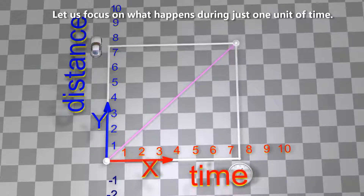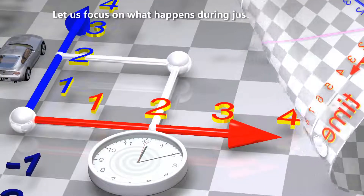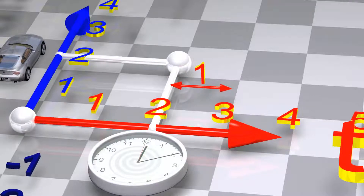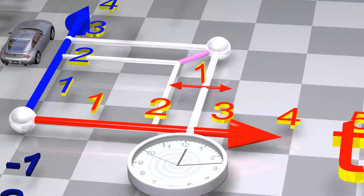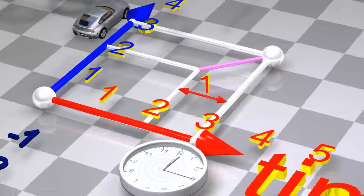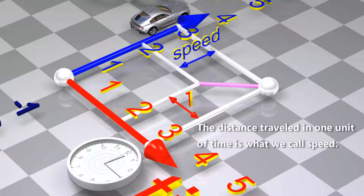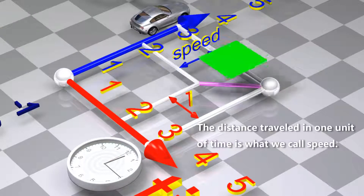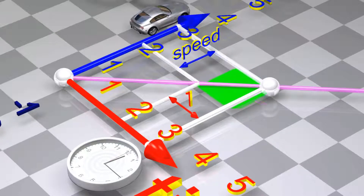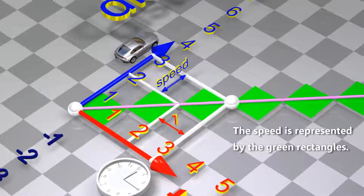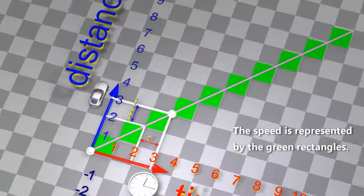Let us focus on what happens during just one unit of time. The distance traveled in one unit of time is what we call speed. The speed is represented by the green rectangles.